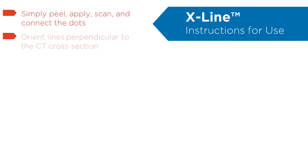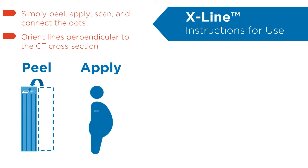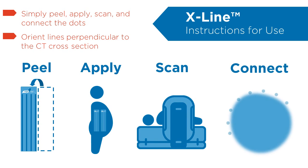X-Line is extremely simple to use — just remember to orient the lines perpendicular to the CT cross-section. Start by peeling off the protective liner to expose the adhesive. Apply it to the patient's skin over regions that would be in the extended field of view. Perform the CT scan as usual. Then, just connect the bright, hyper-dense dots in the resulting CT images. It's that easy.